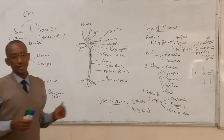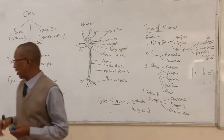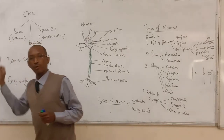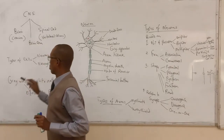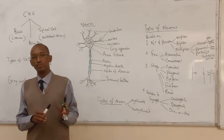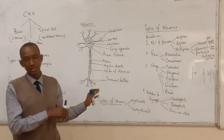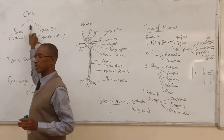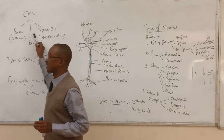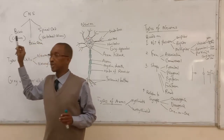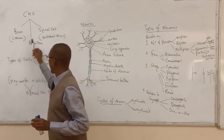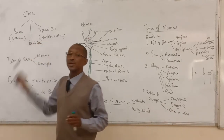As I was saying in our last lecture, I discussed the division of the nervous system into two parts: what we call the central nervous system and the peripheral nervous system. I also mentioned that the central nervous system is made up of three basic things: the brain, the brain stem, and the spinal cord.